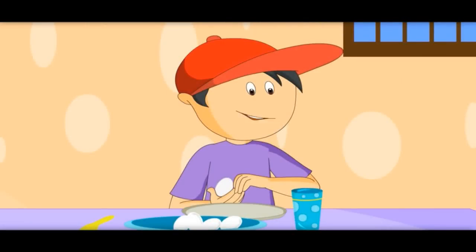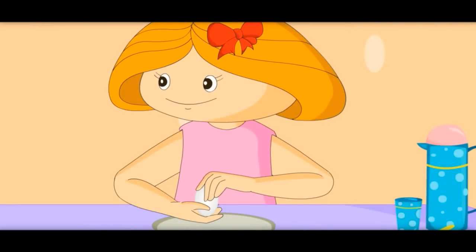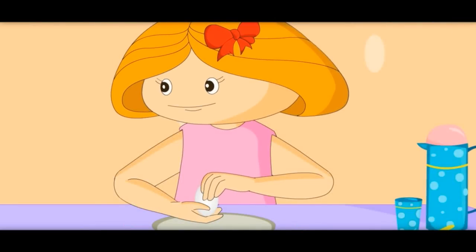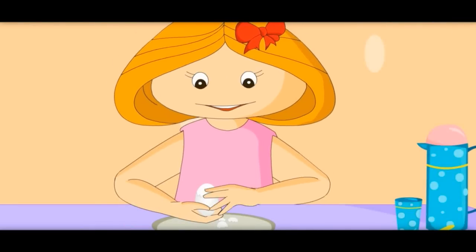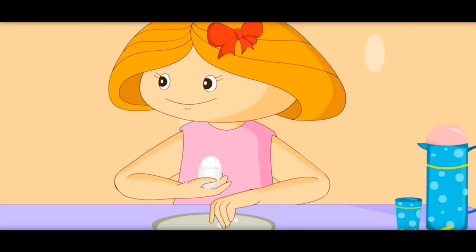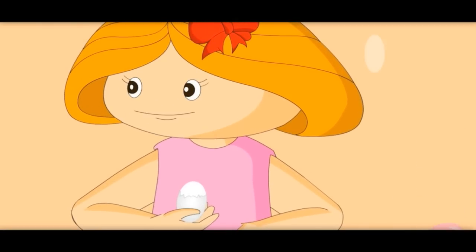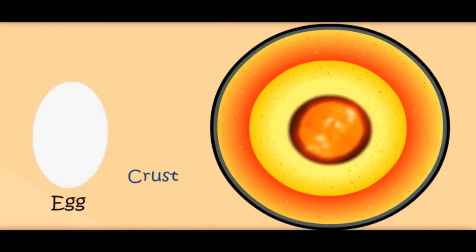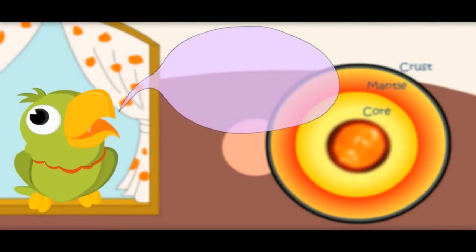Egg is like our Earth! Earth is like an egg — let me show you. You see this outer layer? This is like Earth's crust. Crust is the upper layer of the Earth where we all live. All trees and animals live on the crust of the Earth. Crust is the outer layer of the Earth.